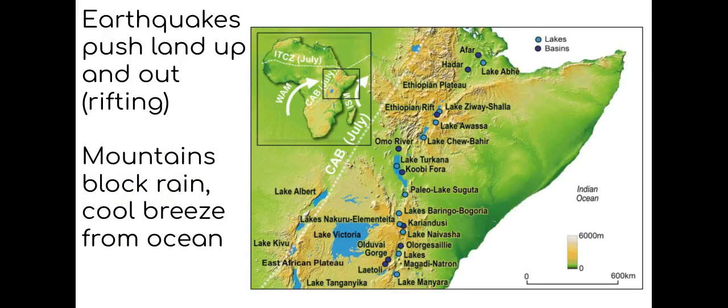This area is also prone to earthquakes because there is a major crack that is causing rifting, as the Horn of Africa, as it is called, is slowly moving away from the rest of Africa. As land is pushed up by tectonics, it creates mountains. These mountains end up blocking rain and the cool breeze from oceans, which makes this area even warmer.